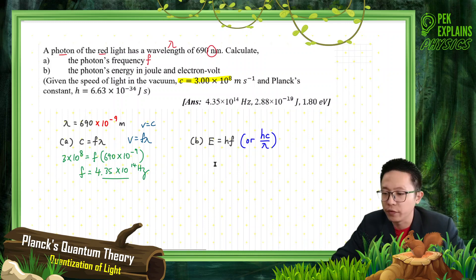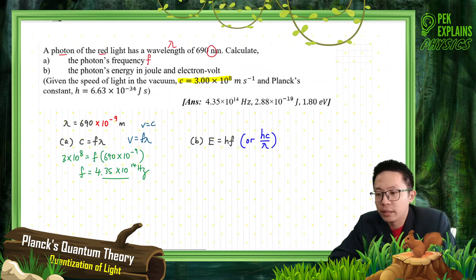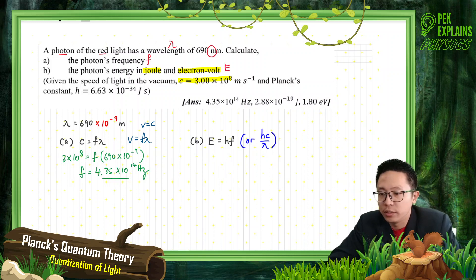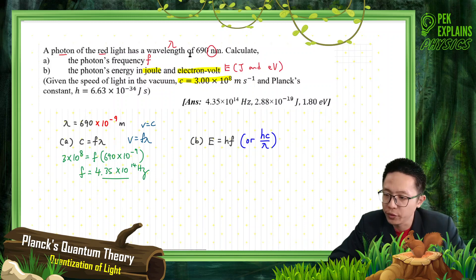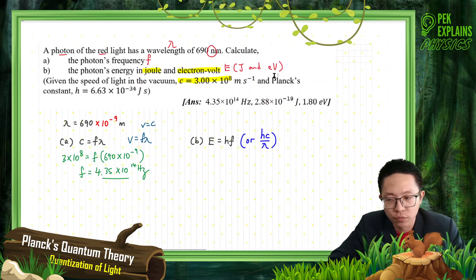Now let's continue with question B. We want to find the photon's energy in joule and electron volt. So here we have two units — we need the energy in joule and also electron volt. Both are units for energy. Especially in this topic, the photoelectric effect, we will use a special unit called electron volt.